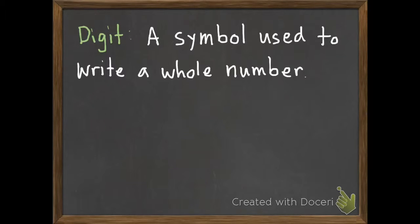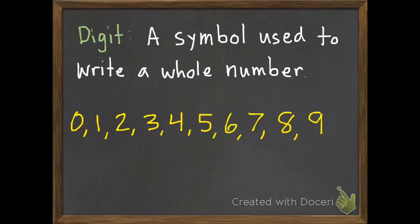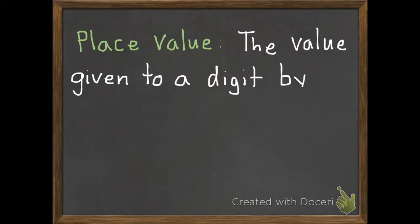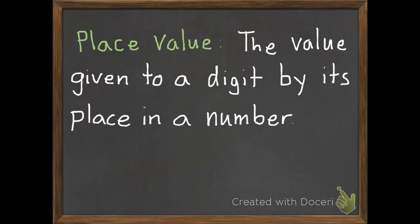Digit is a symbol used to write a whole number. The symbols that we use are 0, 1, 2, 3, 4, 5, 6, 7, 8, and 9. Our second vocabulary word is place value. Place value is the value given to a digit by its place in a number.